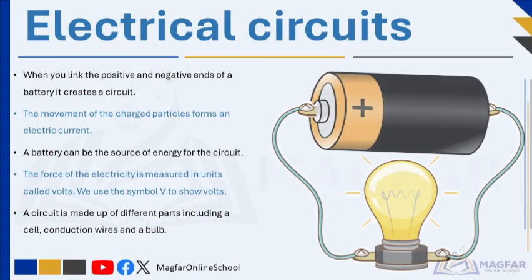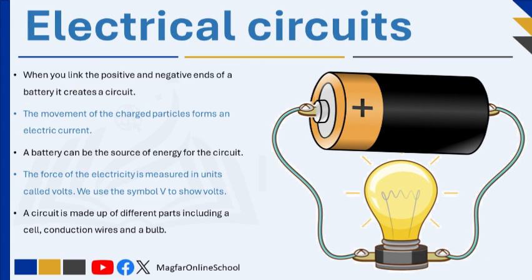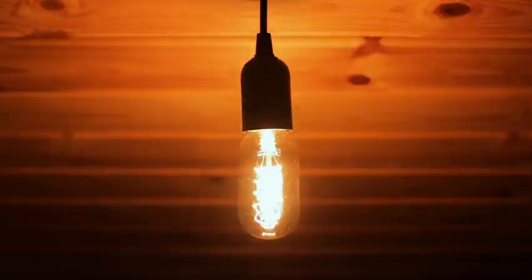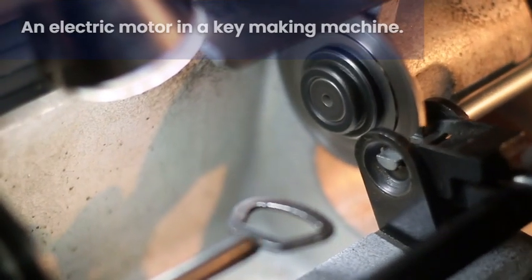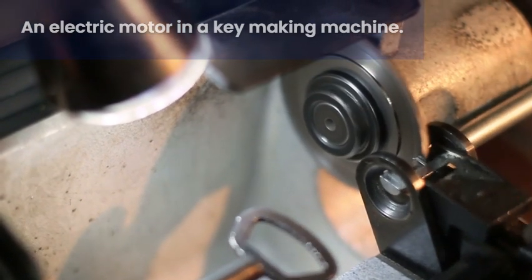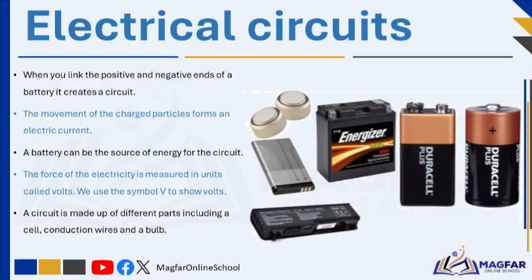When you link the positive and negative end of a battery, it creates a circuit. An electrical circuit is like a road or pathway that begins and ends in the same place. For electricity to flow, the circuit must be continuous. This continuous flow is called an electric current. The current carries energy through the circuit. We can make electrical current do things for us — for example, we can make it light up a bulb or turn a motor. The movement of charged particles forms an electric current. A circuit is a complete path around which electricity can flow.